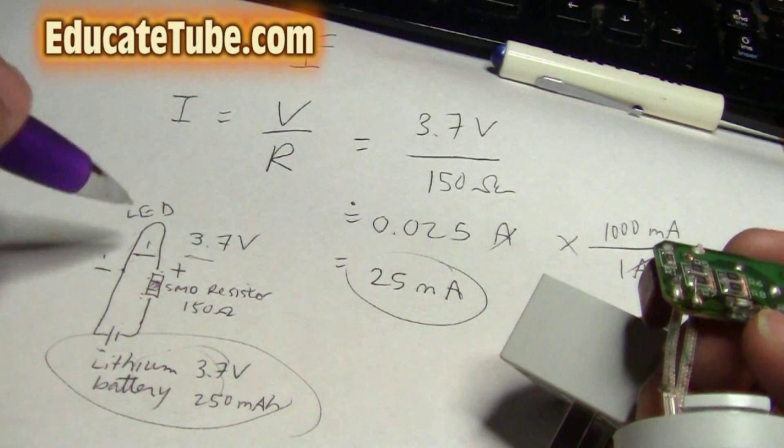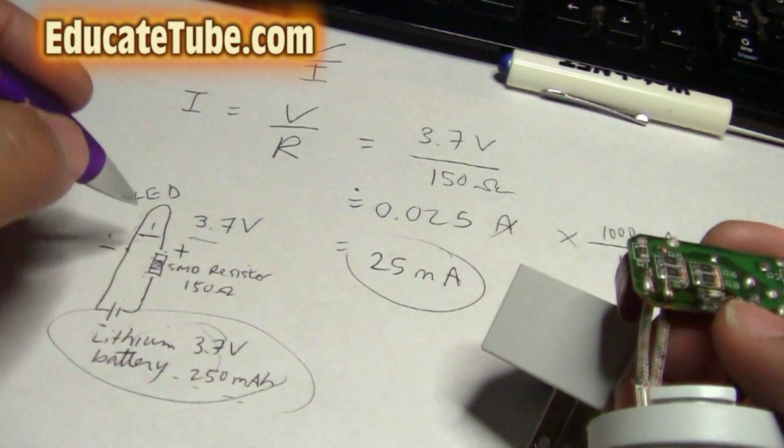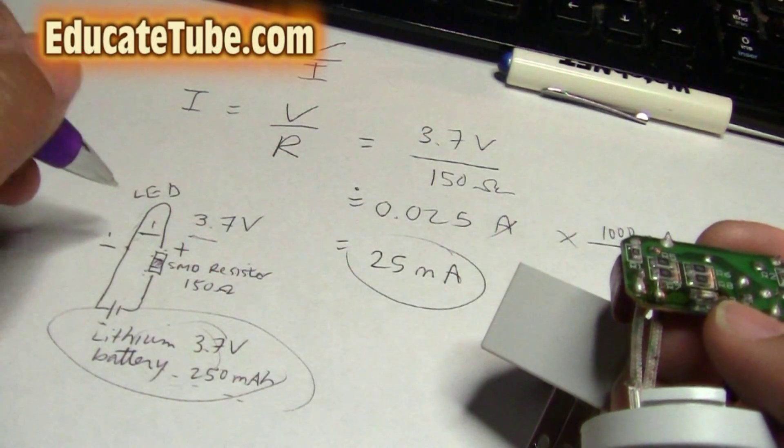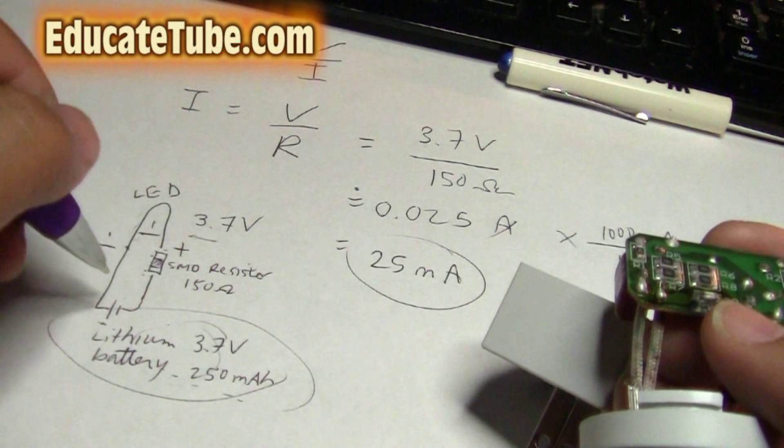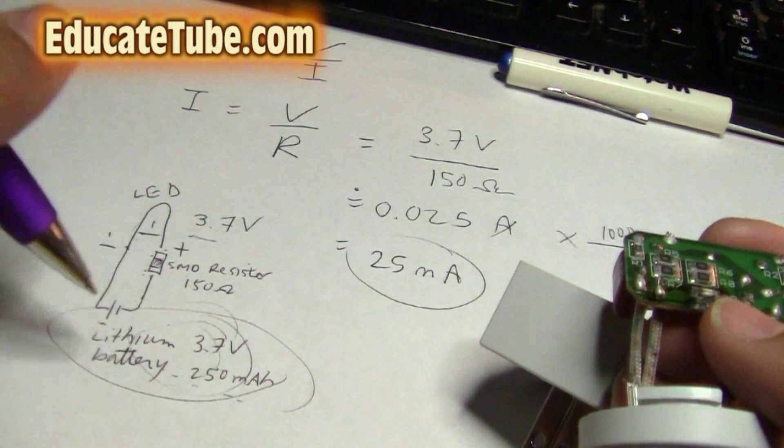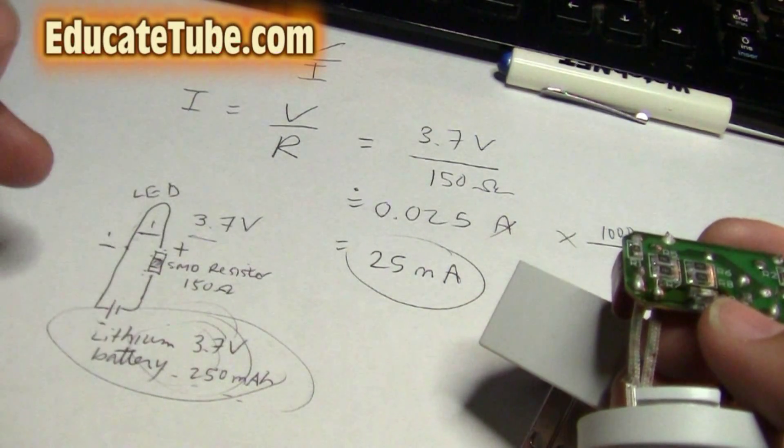I suspect, according to this 250 milliamp hour, in theory, it should last at least 9 hours, 8 to 9 hours. But even on the safe side, let's say between 6 hours to 7 hours, it's still pretty good. And then you can recharge this LED light. Sorry, this lithium battery again, 250 milliamp hour battery. So let's give it a try.